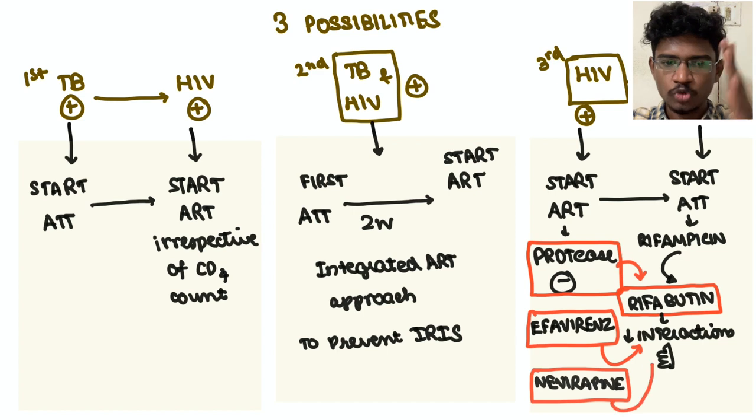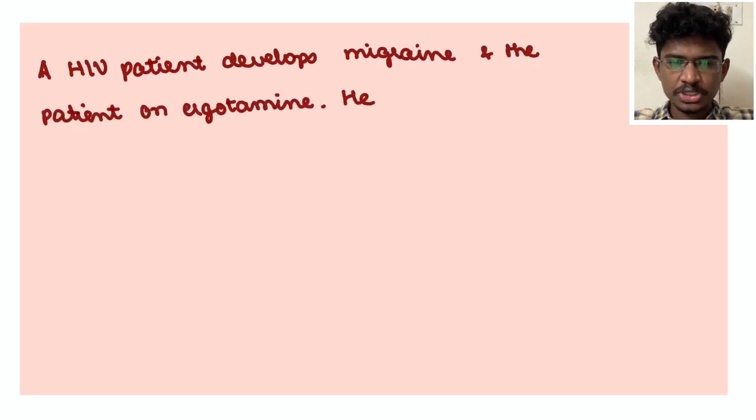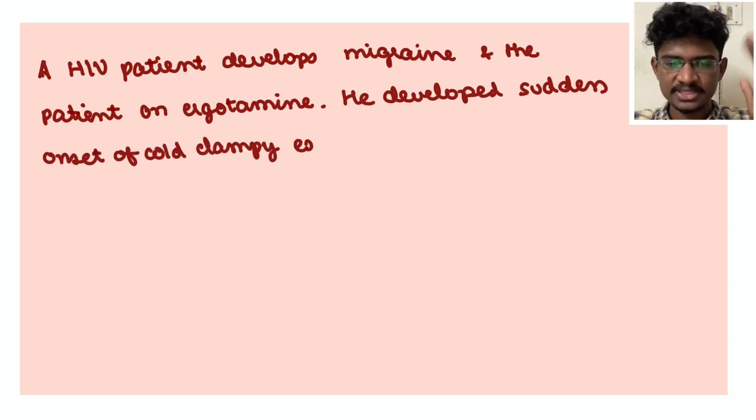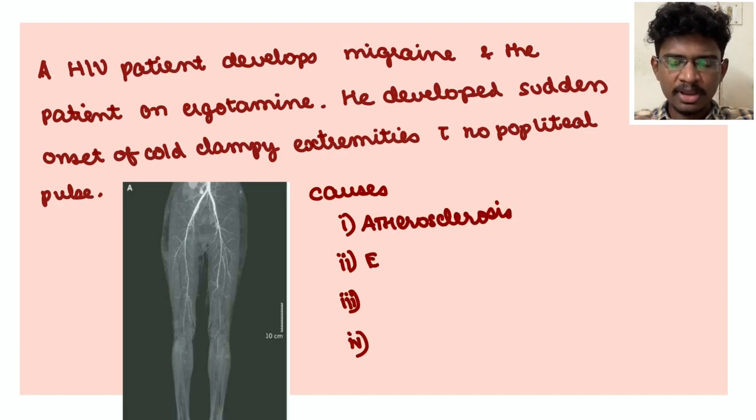So the option to our question will be: first ATT, two weeks, then ART. Next question: HIV patient with migraine on treatment with ergotamine, he suddenly developed sudden onset cold, clammy foot with absent popliteal pulse, and this image was given. So what is the cause? A. Ergotism, B. Atherosclerosis, C. Embolism.